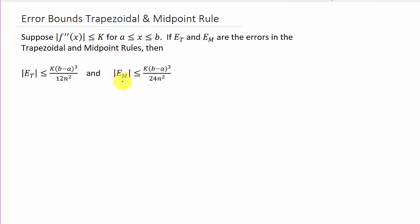Then the absolute value of e sub m is less than or equal to k times b minus a cubed over 24n squared. You can see they're pretty much the same. We've got 12 here, 24 here. So, they're going to be similar. So, let's look at the example.